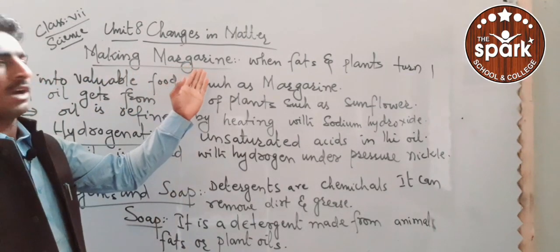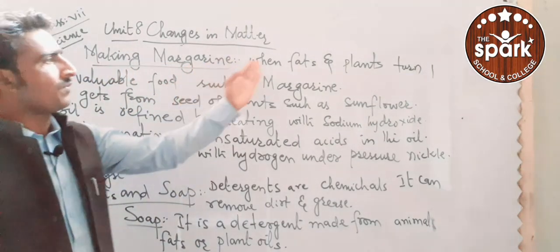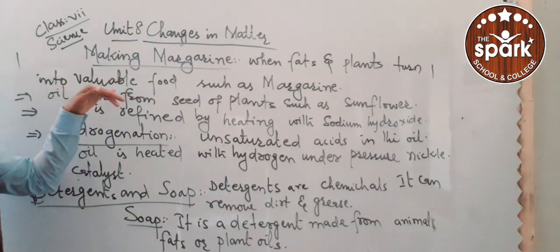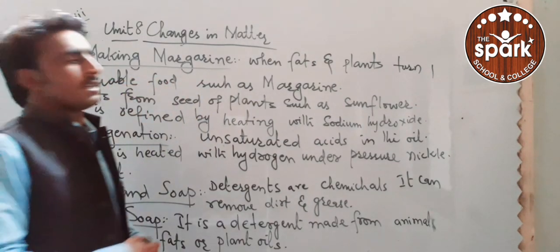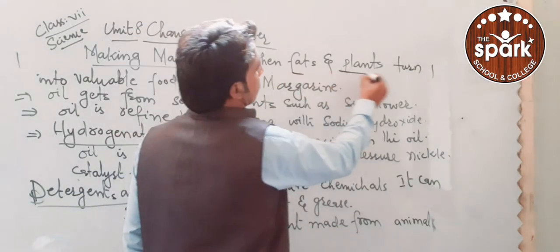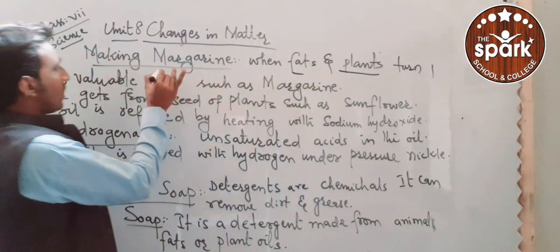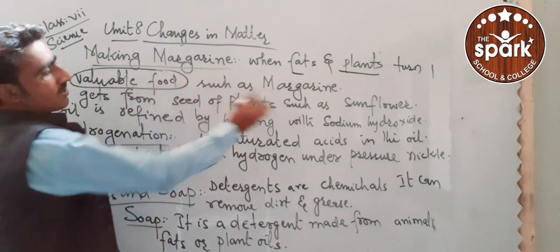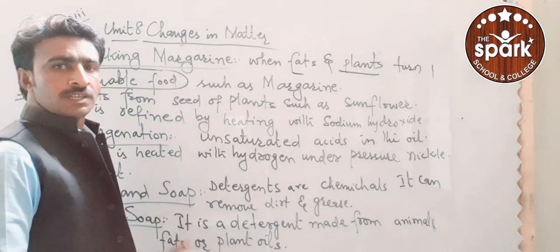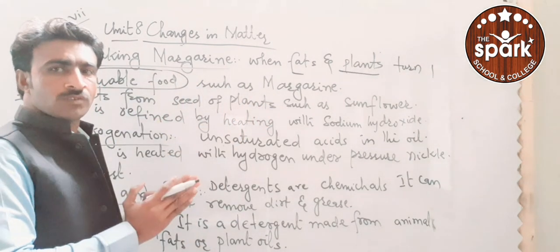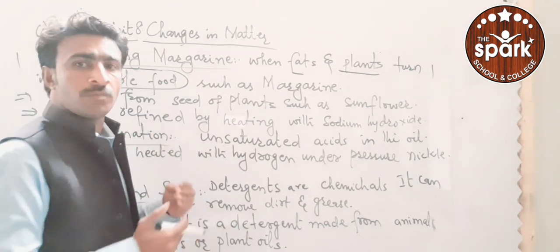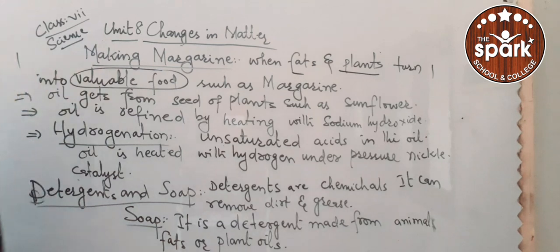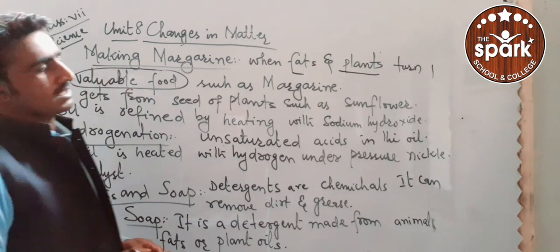What is margarine? How can we make margarine? When fats from plants can turn into a valuable food such as margarine — when fats and plants convert into a valuable food that we can use — that is called margarine. So when any plant or any fat converts into a useful valuable product, we call it margarine.